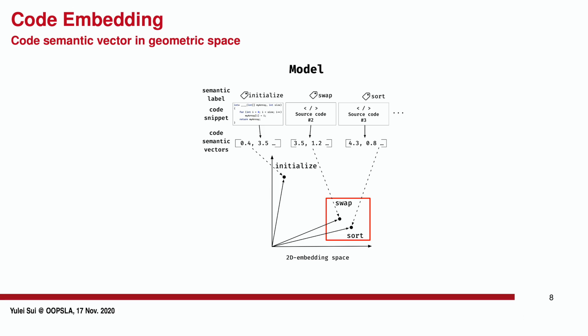A closer distance between two vectors implies a more similar code semantic. Once the model is trained using existing well-labeled code snippets, it can be used to predict the label of a new code fragment, whose semantic is similar to the existing labeled code fragments in the training set.